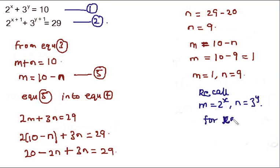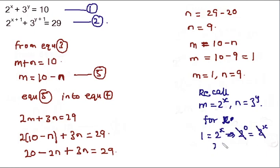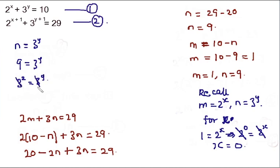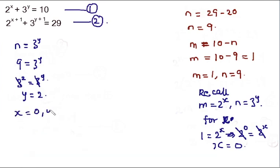Recall that m = 2^x, so 1 = 2^x. Since 1 = 2^0, this implies x = 0. For y, recall n = 3^y, so 9 = 3^y. Since 9 = 3², we get y = 2. Therefore x = 0 and y = 2.